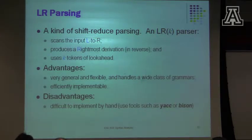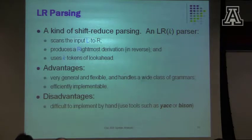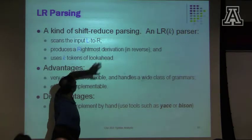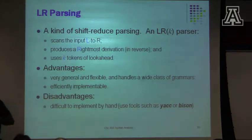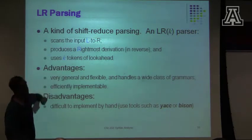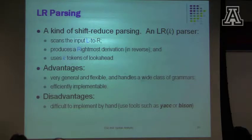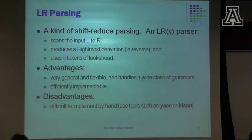People talk about LRK parsers. An LRK parser scans the input from left to right — that's the L. It produces a rightmost derivation in reverse — that's the R. Top-down parsers typically produce a leftmost derivation and are called LL parsers. I use K tokens of lookahead to make my decision about shifts and reduces. Most of the time, for our purposes, K will be equal to 1, because more than that the size of the parse tables just explodes.